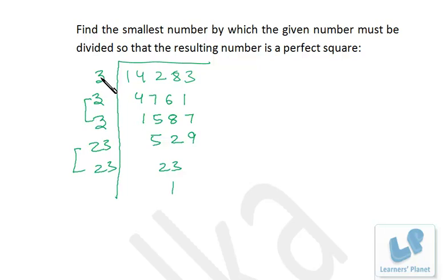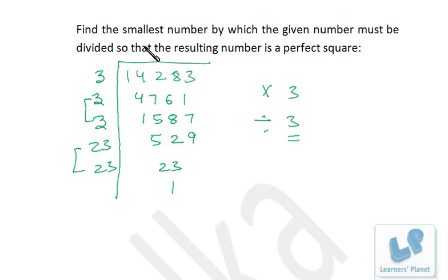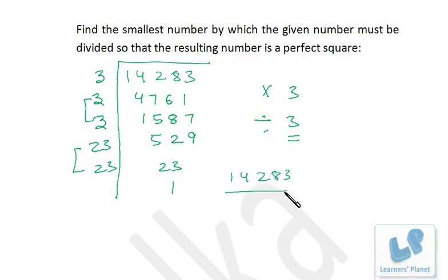Since we are left with one unpaired 3, this number is not a perfect square. To make it a perfect square, we either eliminate this 3 by dividing, or add one more 3 by multiplying. In this case, since the question asks to divide, we divide 14283 by 3, and the resulting quotient will be a perfect square.